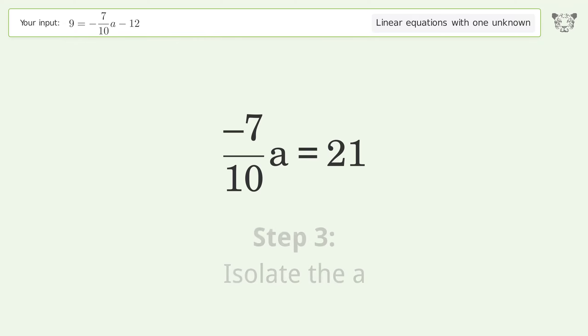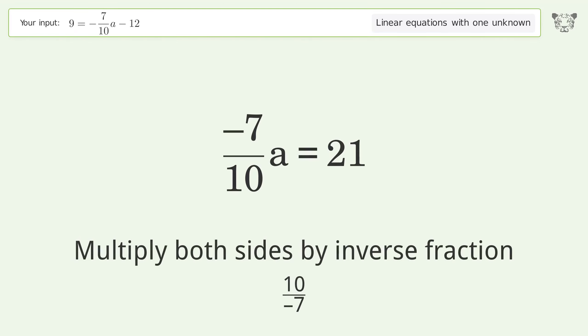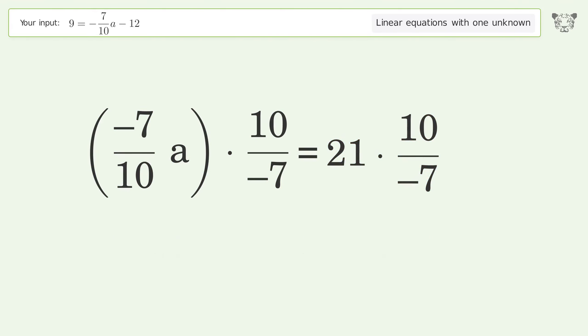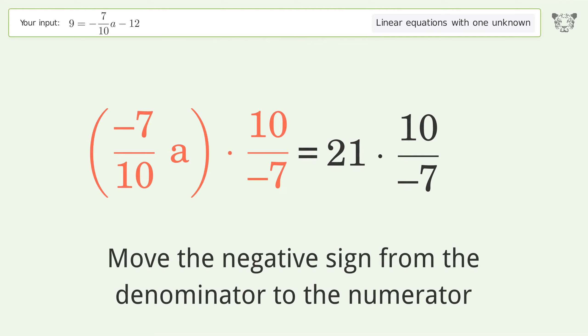Isolate the a. Multiply both sides by inverse fraction 10 over negative 7. Move the negative sign from the denominator to the numerator.